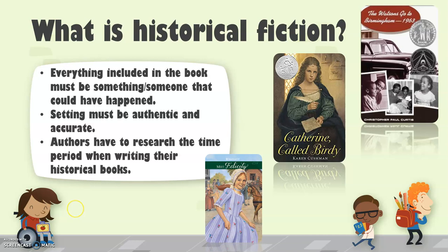When you're writing a historical fiction book, it is really important to do the research on what the characters would have worn, how they would have talked, what kinds of things they would have used, what their home would have looked like. So we've got the American Girl series — Felicity here, set in 1774 Boston. Felicity is not a real person, but many girls like Felicity did live in Boston in 1774. They really would have dressed like she's dressed. They wouldn't drive cars — they would have ridden horses. Their dresses were long, the streets were dirt, and the men wore three-cornered hats.